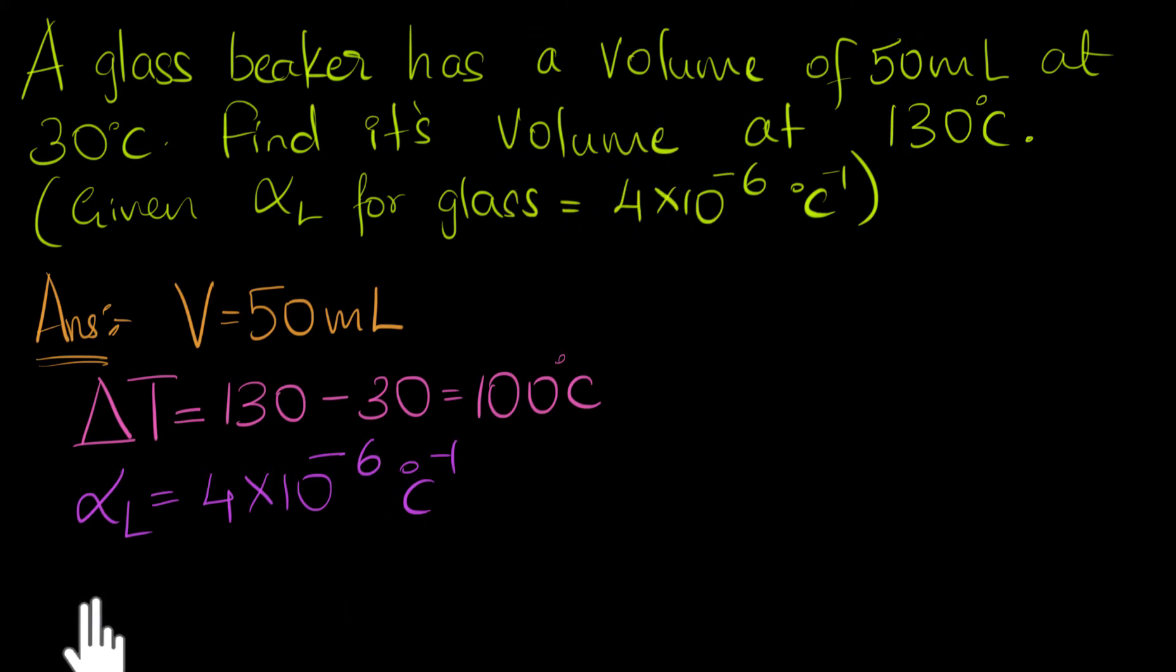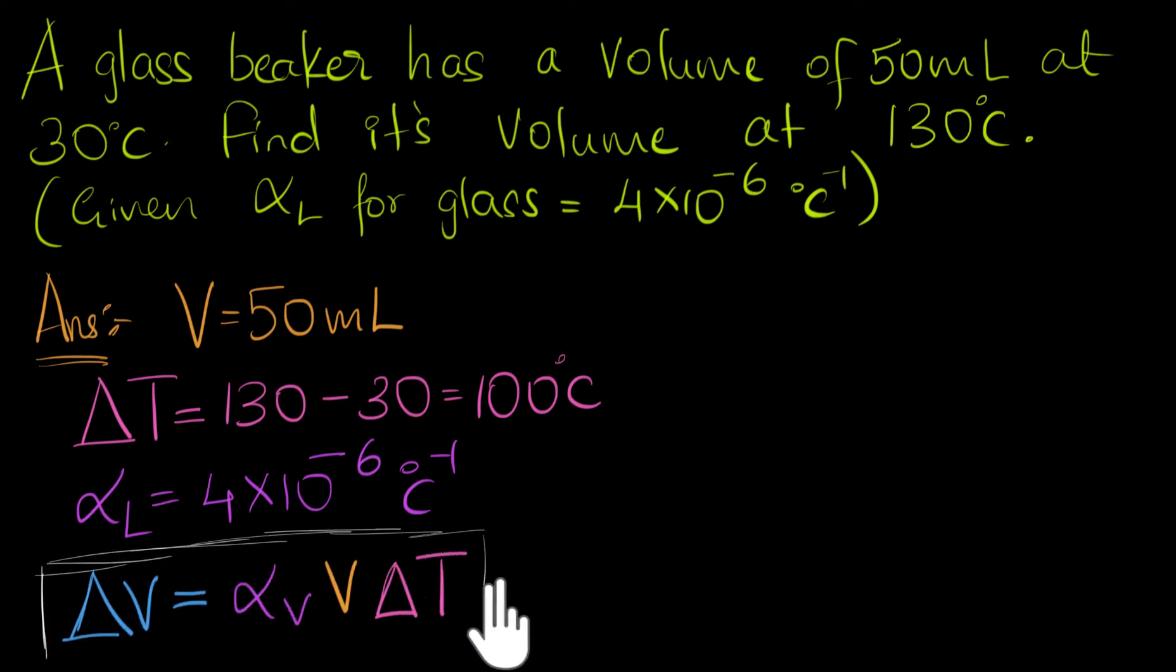To do that, let's calculate the change in volume first. The change in volume is given as alpha V, that's the volume expansion coefficient, times V times delta T. We've seen this expression in a previous video. So if you need a refresher, it would be a great idea to watch that one first and then come back over here.